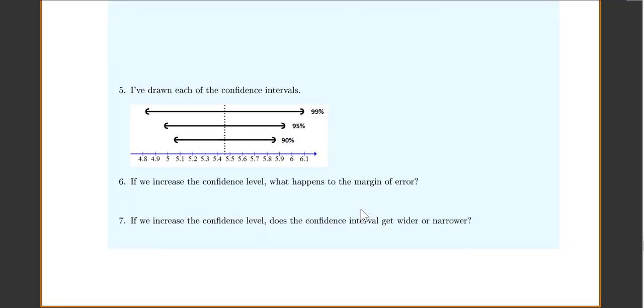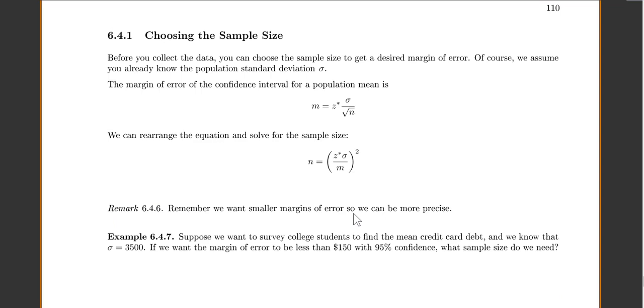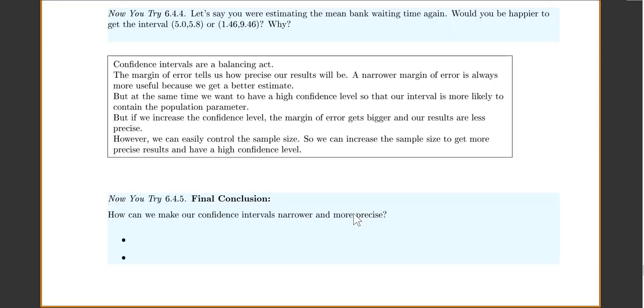There are now-you-try problems that I want you to do so you understand it. But for our final conclusion, let's make sure we know what we're supposed to get. If you want a higher confidence level, say you want to go from 95% to 99%, that will make your interval wider because to be more confident, you have to make your interval wider.